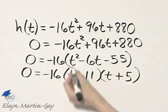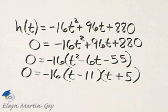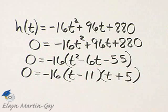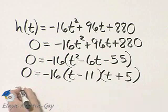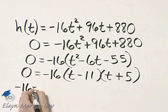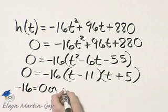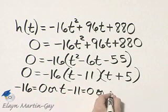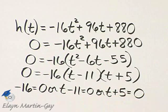Now let's check. That's t squared. 5t minus 11t is negative 6t. And last times last is negative 55. Now once we factored, remember we set each factor equal to 0. So negative 16 equals 0 or t minus 11 equals 0 or t plus 5 equals 0.